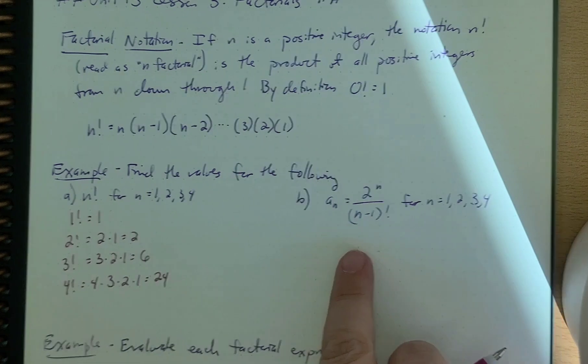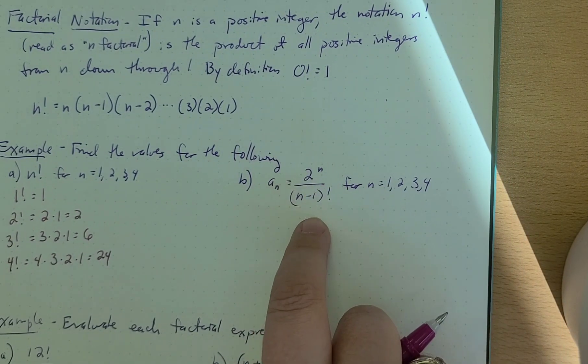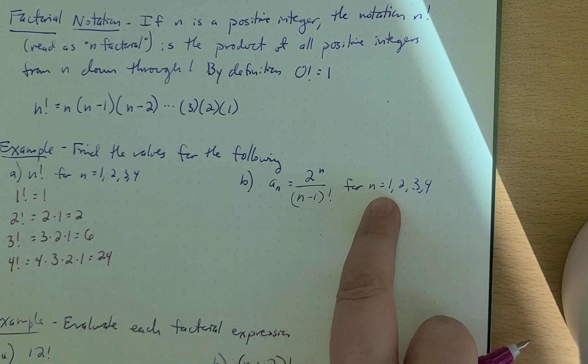Easy. We can also do this here. A sub n is equal to 2 to the n over n minus 1 factorial. We're finding it for 1, 2, 3, 4.